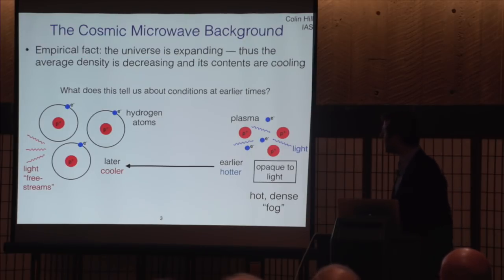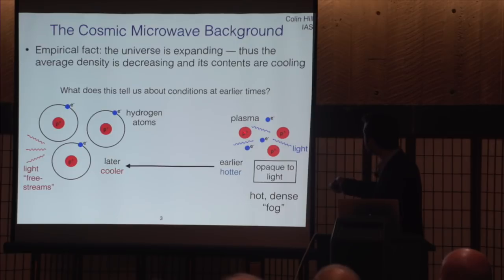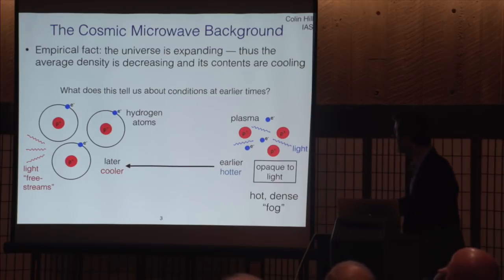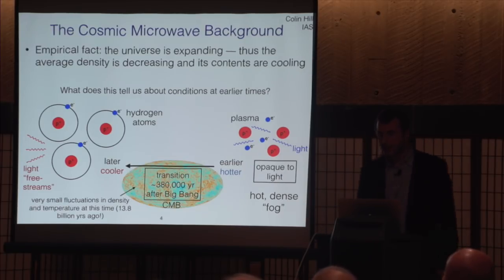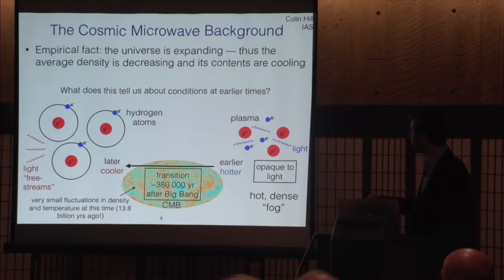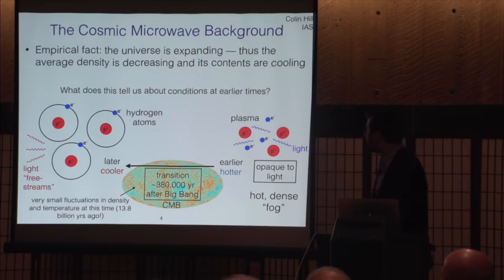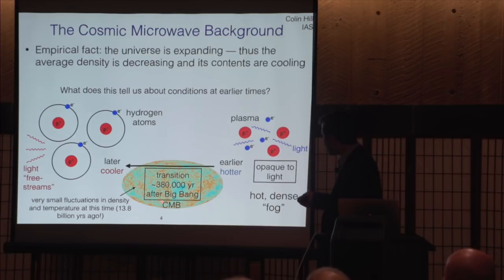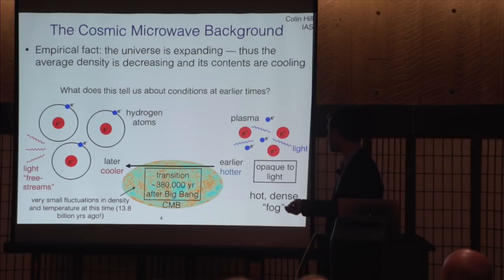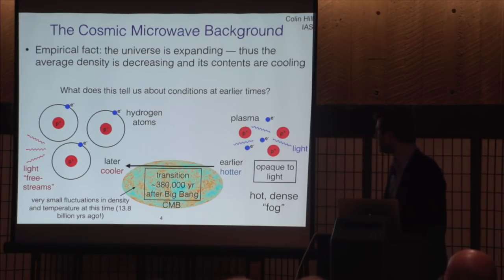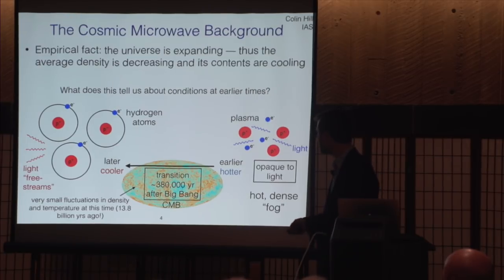As the universe expands, it cools down, and eventually cools enough that electrons join up with protons to form hydrogen atoms. At that point, the light can just free stream away — the radiation has also cooled down. The moment when this happens is about 380,000 years after the Big Bang. That's the light we're seeing in the cosmic microwave background. It gives us a window onto what the universe looked like almost at the instant of its creation. The universe is about 13.8 billion years old, as we now know with pretty high precision.